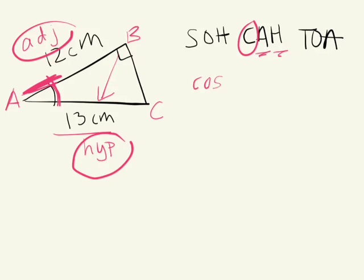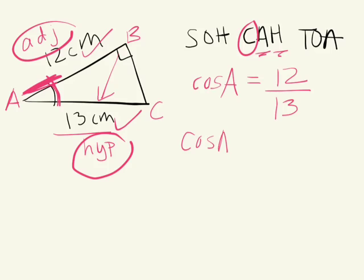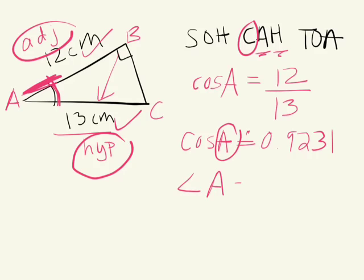Cos A is equal to 12 over 13 — adjacent over hypotenuse. We're going to divide 12 by 13, which gives 0.9231. But we need to find the angle, so we're going to use the inverse button and round to the nearest degree. Angle A is approximately equal to 22.6, which we'll round off to 23 degrees.